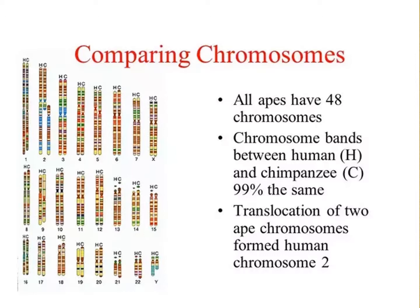Telomeres are usually found only at the ends of chromosomes, not in the middle. However, within the middle of the human chromosome number 2, there is a pre-telomeric sequence, a telomeric sequence, an inverted telomeric sequence, and an inverted pre-telomeric sequence in that order.